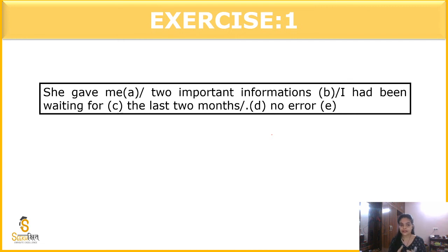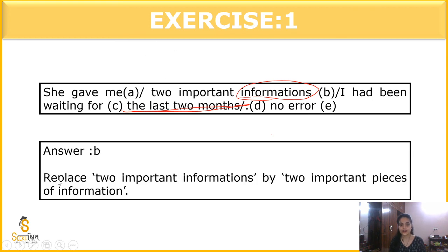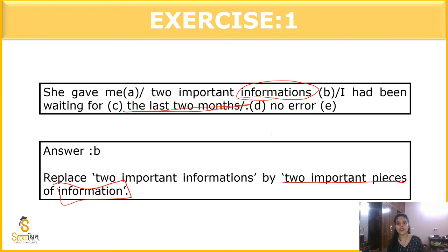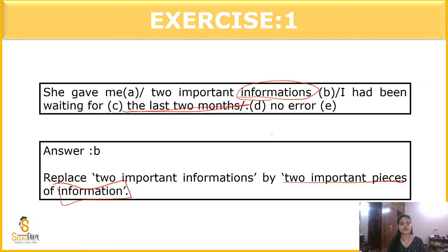The next question: 'She gave me two important information I had been waiting for the last two months.' As I spoke earlier, replace 'two important information' with 'two important pieces of information.' Information is always plural, but to indicate that there are two, we write 'two important pieces of information.' She gave me two important pieces of information I had been waiting for the last two months.